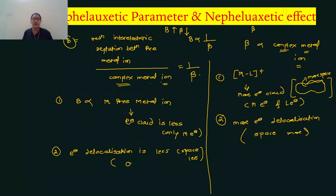In the free metal ion, only metal electrons are present and the space is less, therefore less electron delocalization occurs.